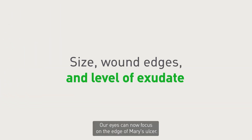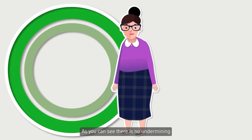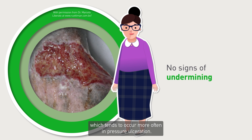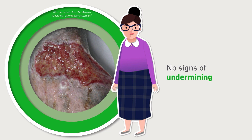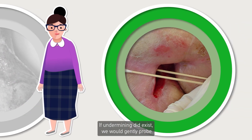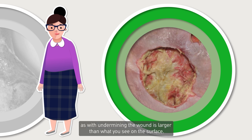Our eyes can now focus on the edge of Mary's ulcer. As you can see, there is no undermining, which tends to occur more often in pressure ulceration. If undermining did exist, we would gently probe under the edge of the wound to establish its true size, as with undermining the wound is larger than what you see on the surface.